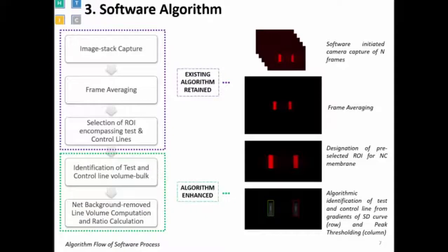On the software algorithm side, some algorithms have been explained in previous publications, so I will not go too deep into those. They mainly involve capturing and analyzing the image. In this particular paper, we explain our enhanced algorithm which removes the background flow — basically the background of the cartridge — which improves our output dynamic range of the instrument.